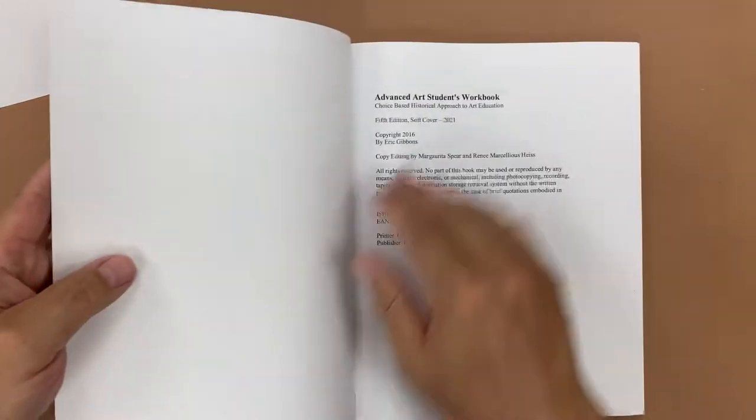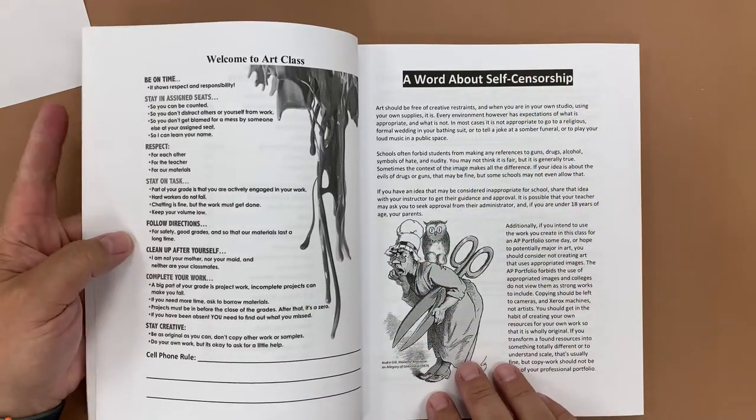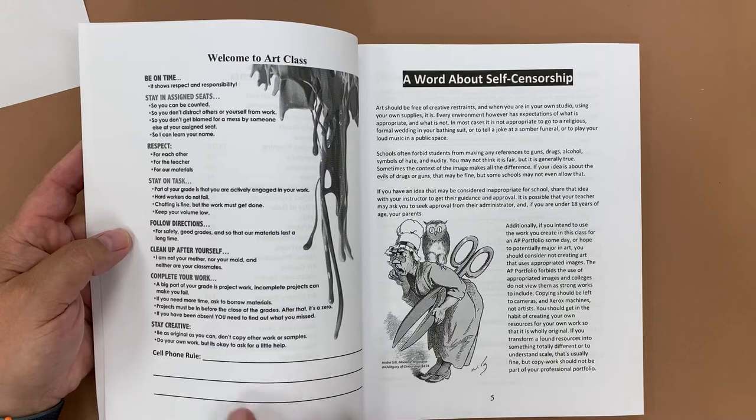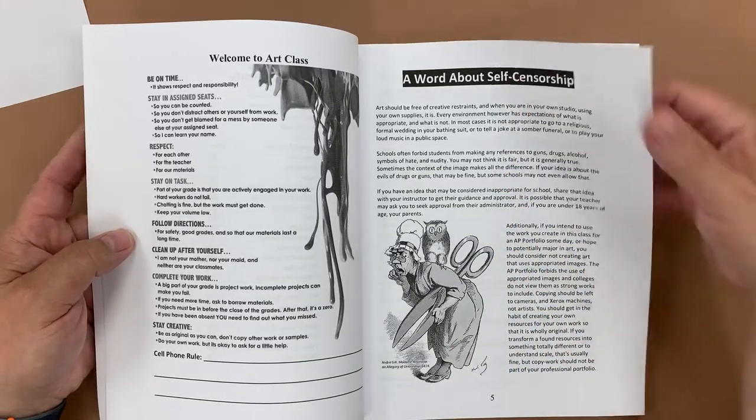As we go through the book, we can see that we have our contents, a little word about censorship. These are the classroom rules that I have that are pretty general, and you can have students put in your cell phone rule and how you'd like that applied to your students.